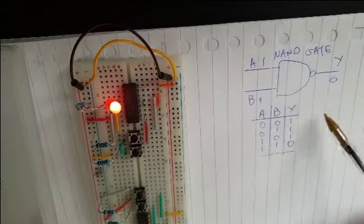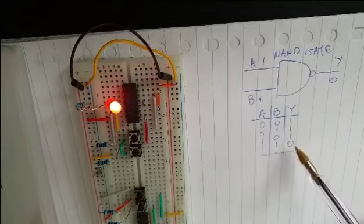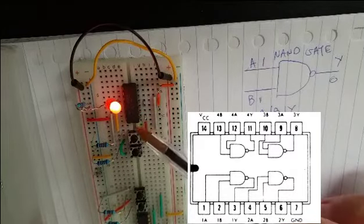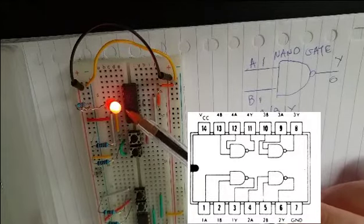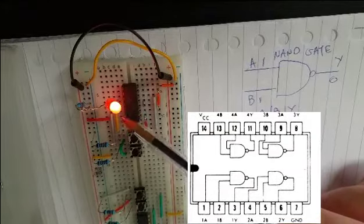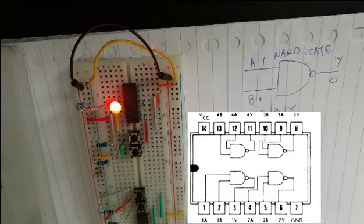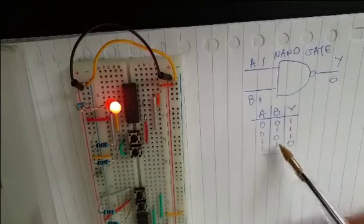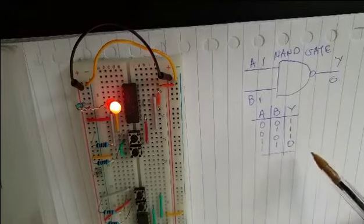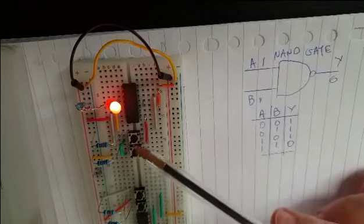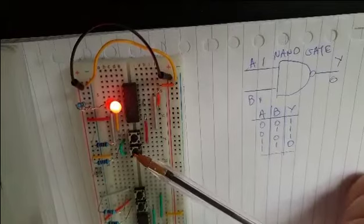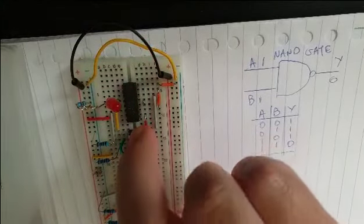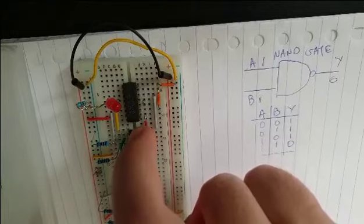Last but not least we have the NAND gate, and here is the truth table and the microchip which contains 4 NAND gates. I have connected the 4th NAND gate — this one is the output and these 2 are the inputs. Practically when you have 0 and 0 the output will be 1; 0 and 1 it will be 1; 1 and 0 gives 1; 1 and 1 gives 0. At this stage both inputs are 0 because the switches are driven to low, so if I click one of the 2 switches it will remain as 1, but if I click both the output will be 0 so the LED will be off.